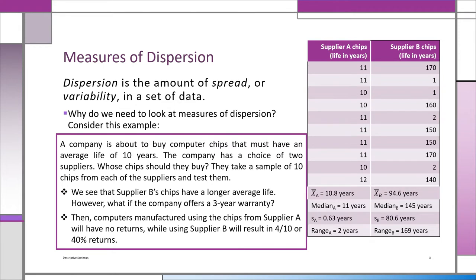If you didn't look at measures of dispersion, you would make the mistake of buying chips from supplier B because of the higher mean — even a higher median too. Those are measures of location. But we're going to look at other measures that will warn us not to buy chips from supplier B, where there's so much variability.